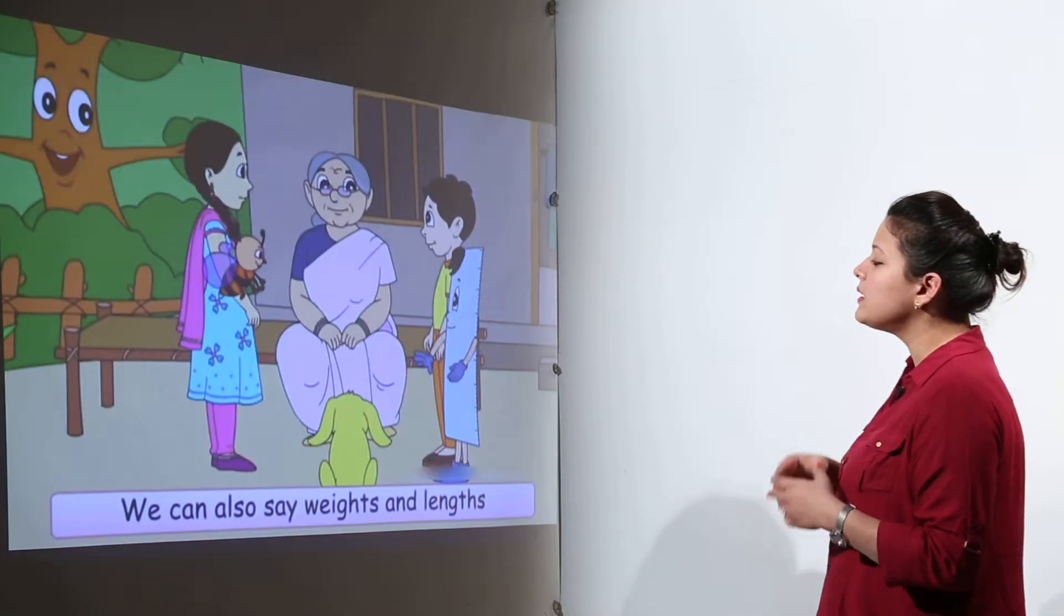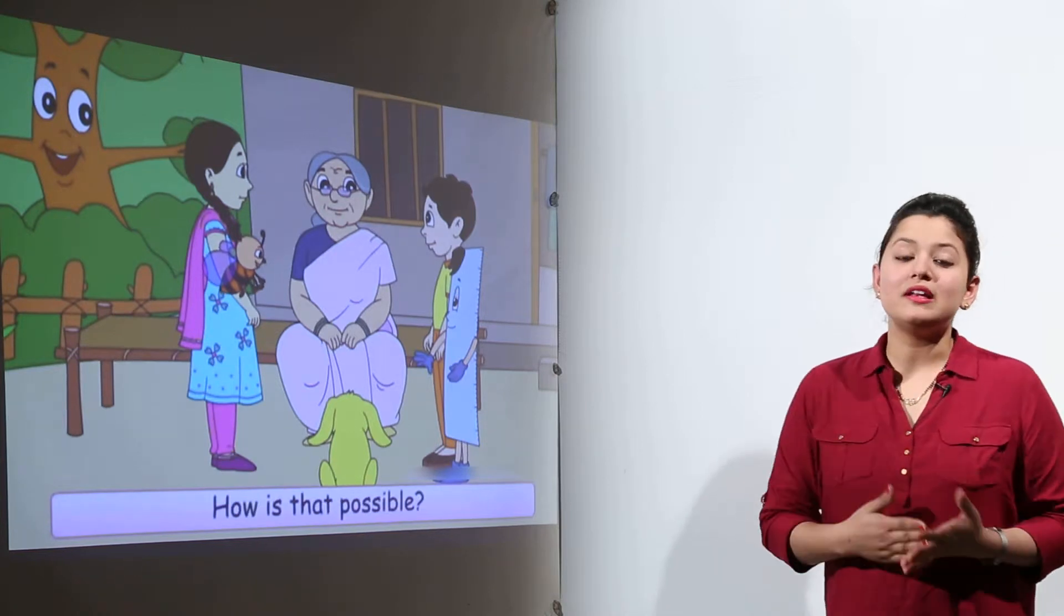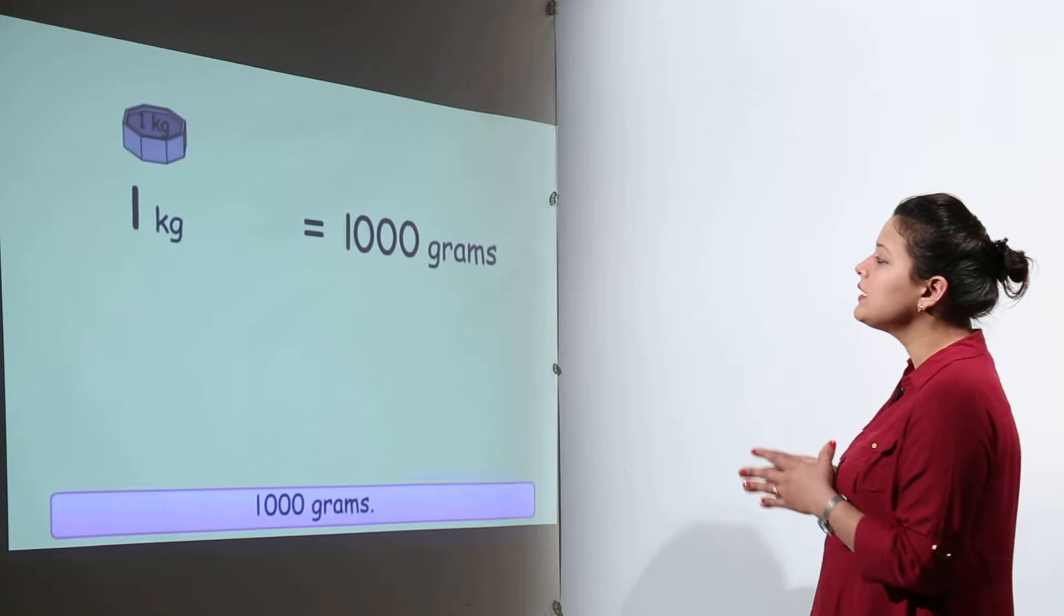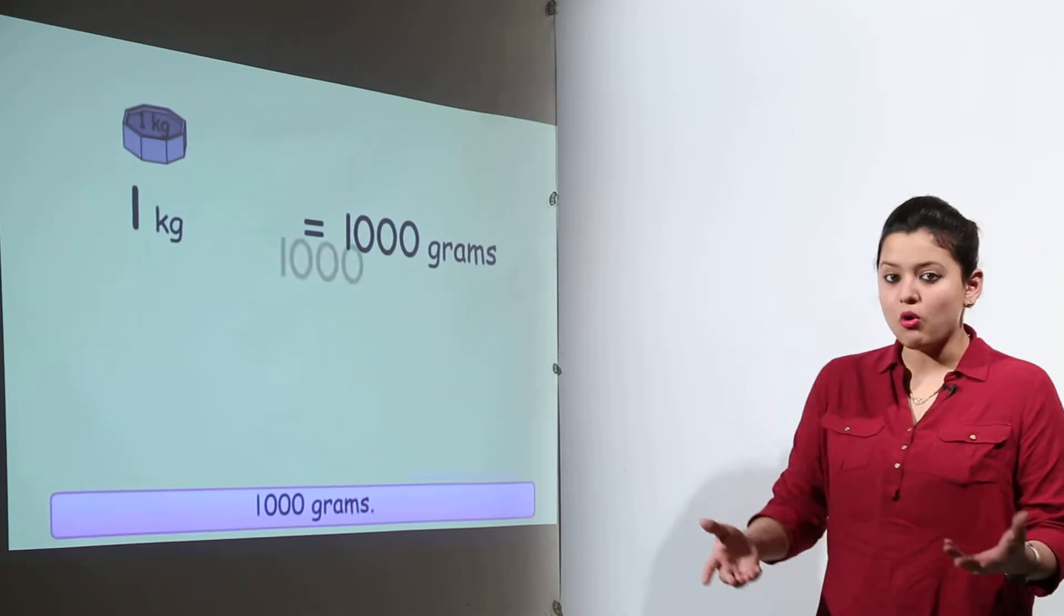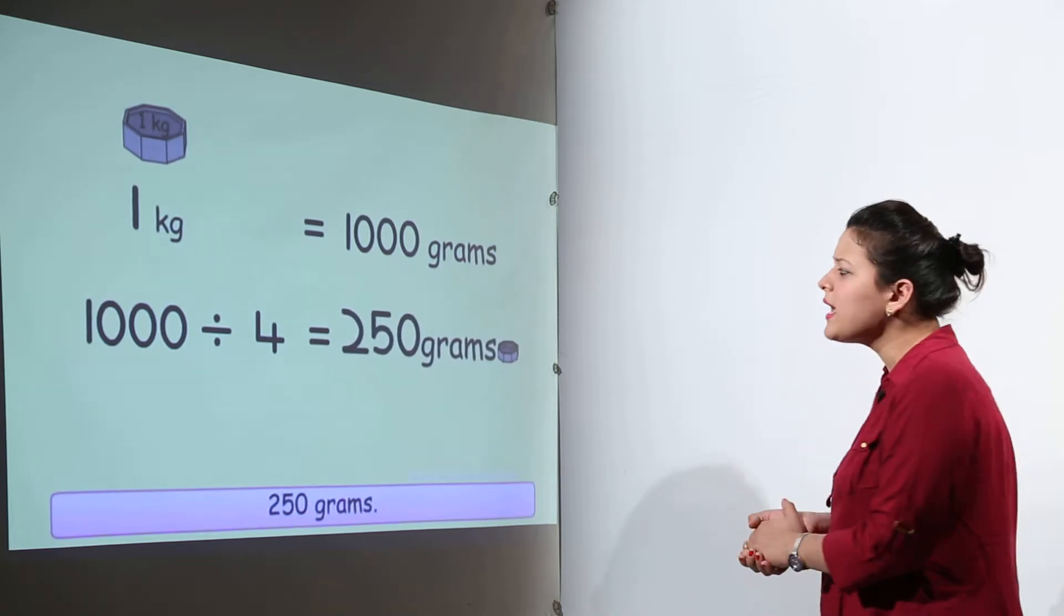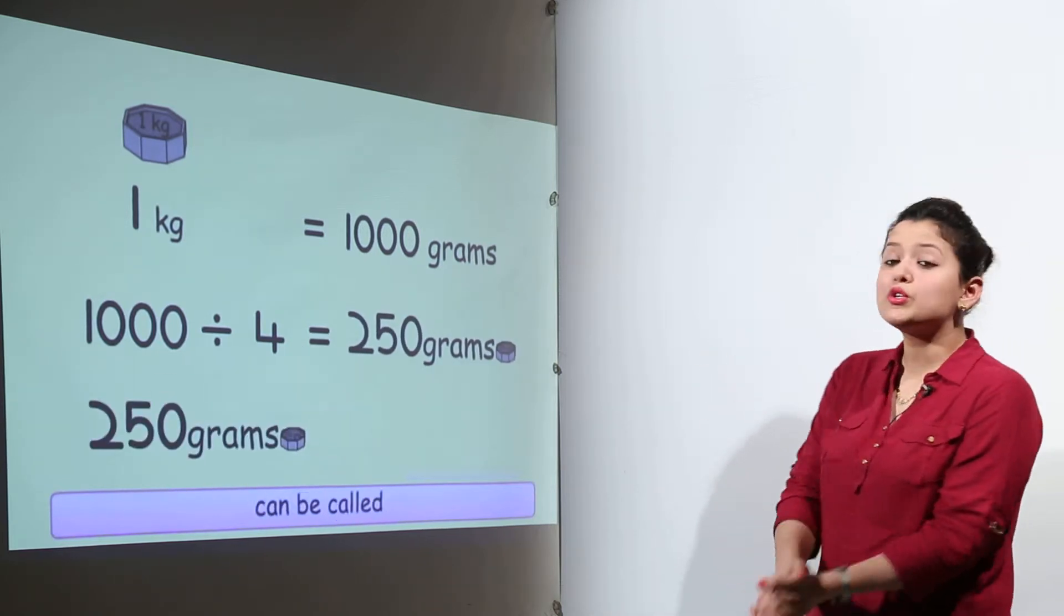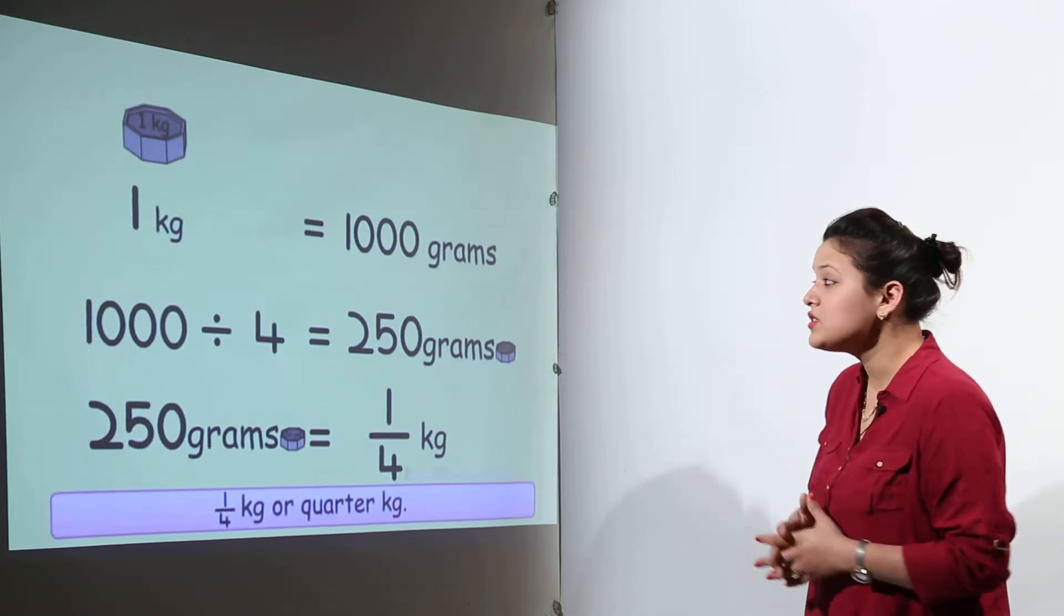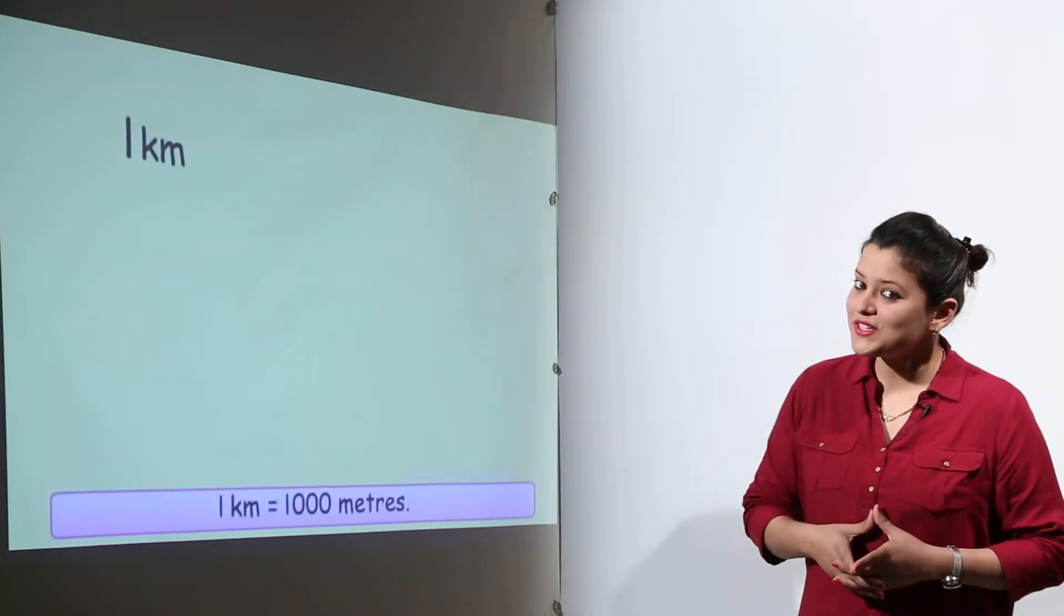Similarly, we can have so many different examples for length and for weights also. Now if 1 kg has 1000 grams, we all know, and if 1000 is divided with 4, what do we get? 250 grams. So 250 grams is known as the quarter of 1 kg or one-fourth of a kg, right?